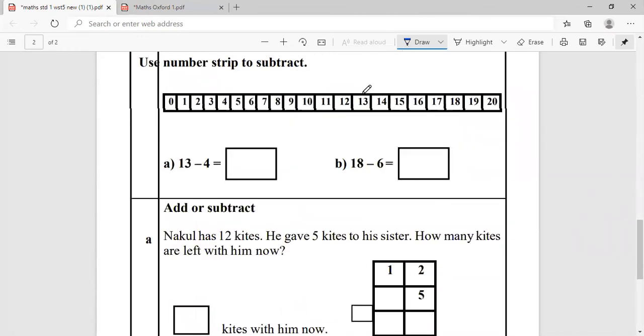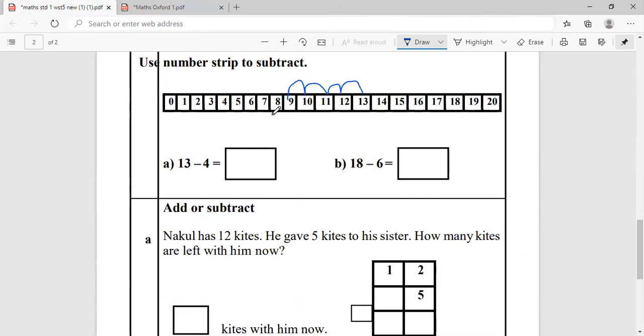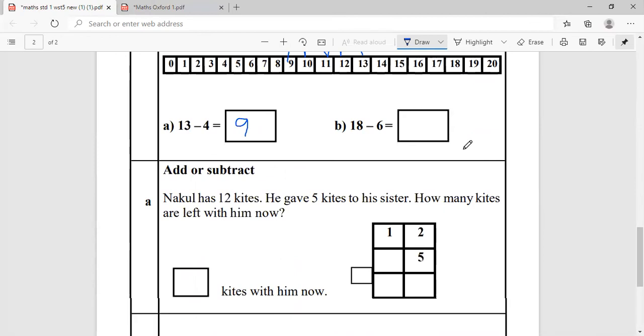Use number strip to subtract. Thirteen minus four. Count back. One, two, three, four. Answer is nine. I am leaving one because now you should be able to do one for you. Do the other one.